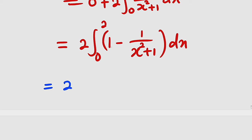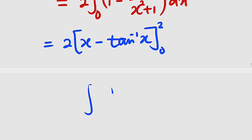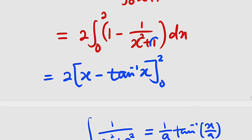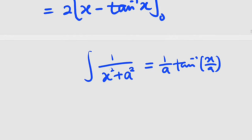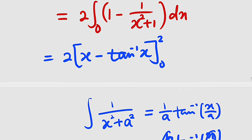Integrating term by term: the integral of 1 is x, and the integral of 1/(x²+1) is arctan(x). This follows from the formula: the integral of 1/(x²+a²) = (1/a)·arctan(x/a). Here a² = 1, so a = 1, giving 1/1·arctan(x/1) = arctan(x). So the result is 2 times [x − arctan(x)] evaluated from 0 to 2.